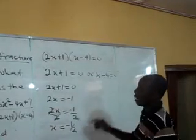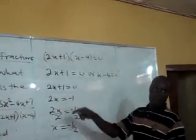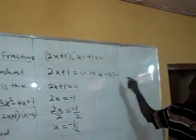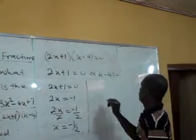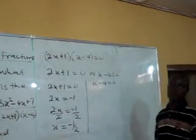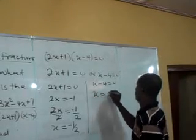That is one of the factors that will make this expression undefined. Now we are looking at the second term again. x minus 4 equals to 0. So x equals to 4.